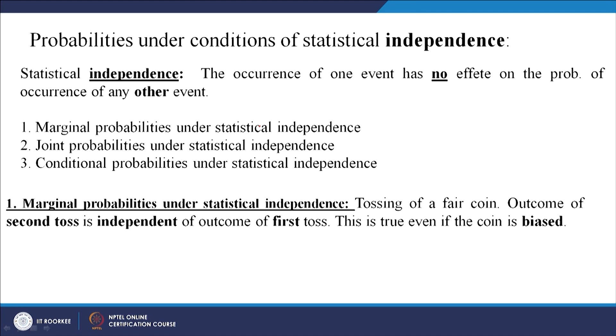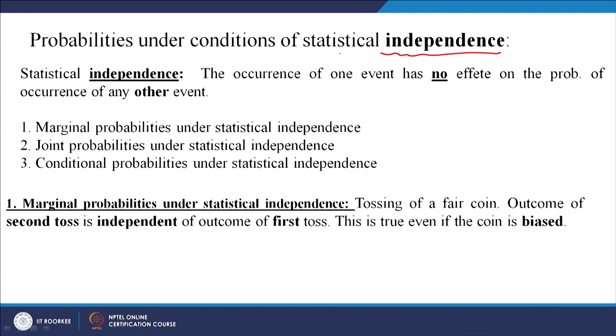Let us look at probabilities under conditions of statistical independence. You can have two types of situations: events are independent of each other or dependent on each other. When I say dependent, the outcome of the second event depends on the outcome of the first event. Under statistical independence, the occurrence of one event has no effect on the other. There are three types of these probabilities: marginal, joint, and conditional.